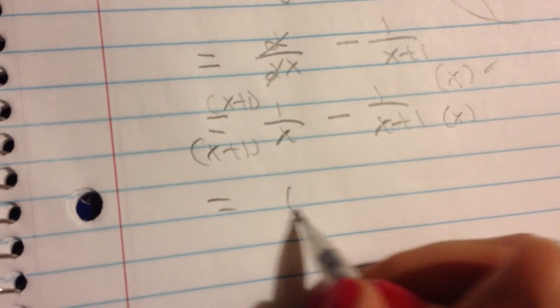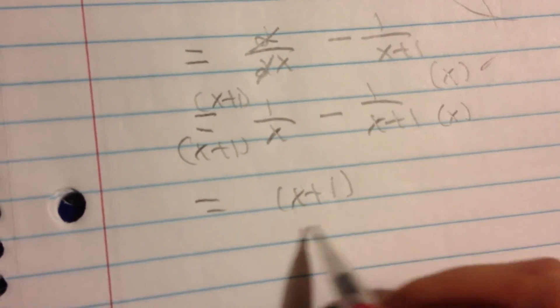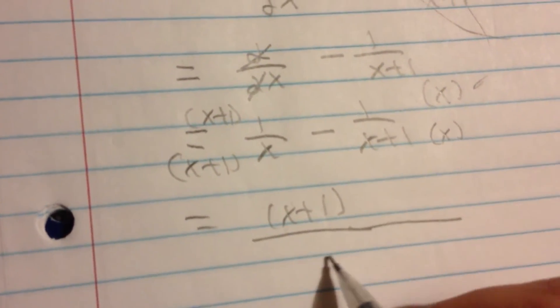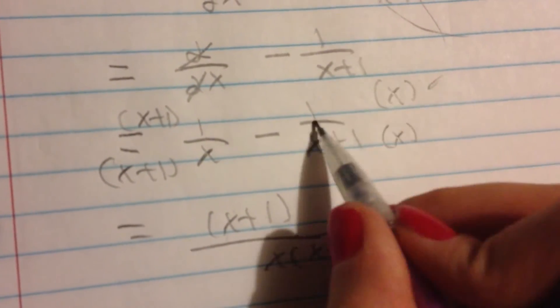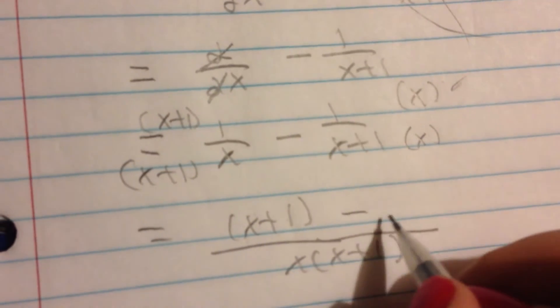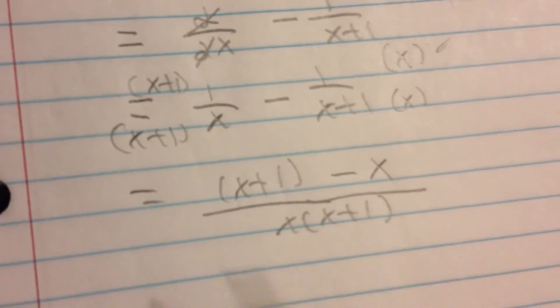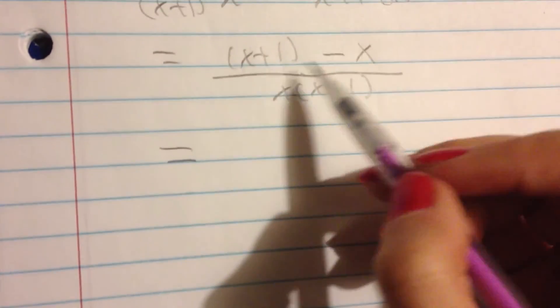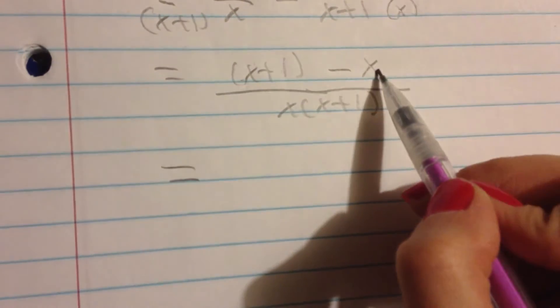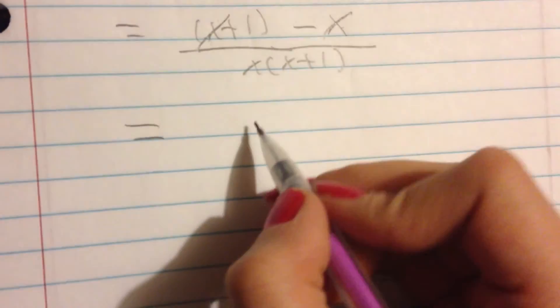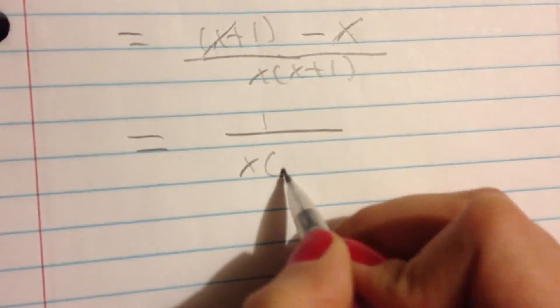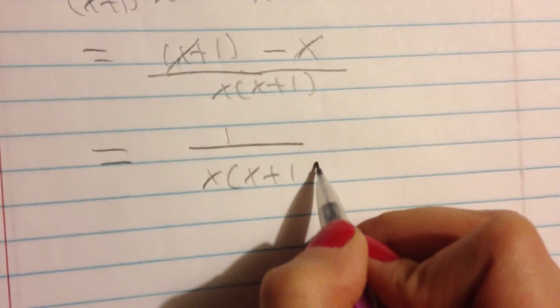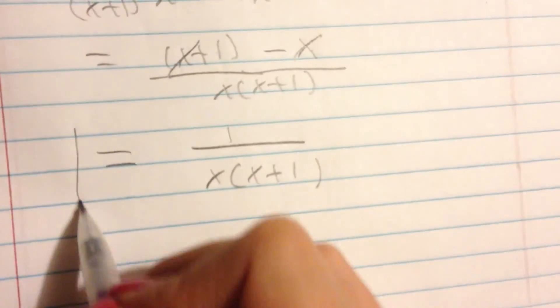What we end up with is x plus 1 all over x times x plus 1, and then over here, we are just going to end up with a minus x. So what we can do over here is cross some things out too. So we have a positive x with a negative x, so we will just cross out. So what we are left with is 1 all over x times x plus 1, and we are done.